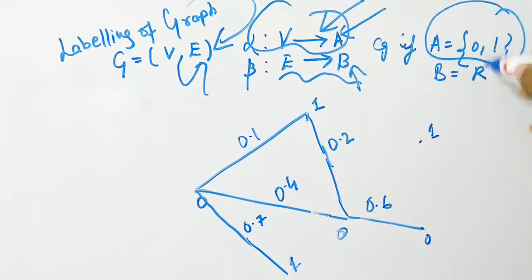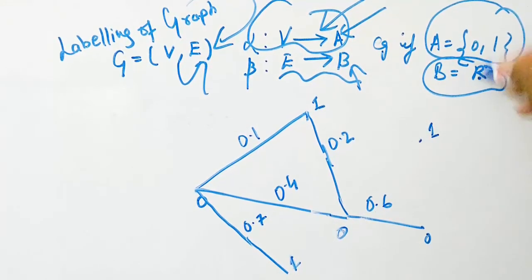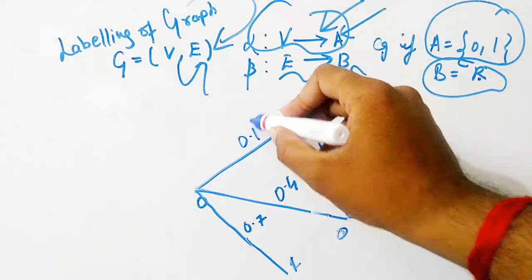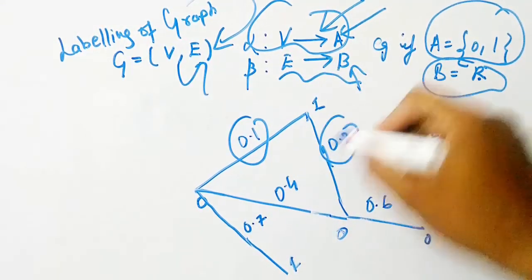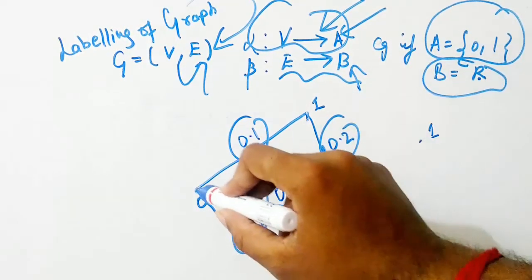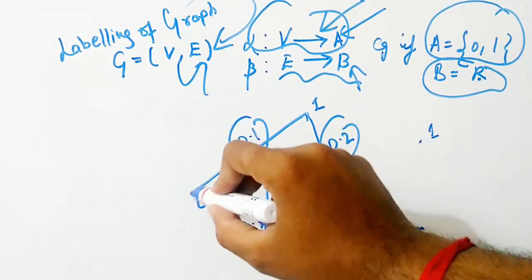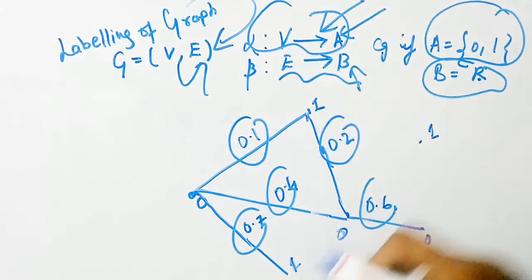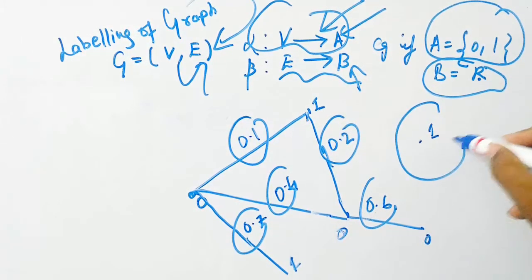For example, if the A set is 0,1 and B is a set of real numbers, then it can be labeled as 0.1, 0.2, 0.4, 0.7, 0.6 here. And the vertices are labeled as 0, 1, 0, 1, 0, and 1. So this is how graphs can be labeled.